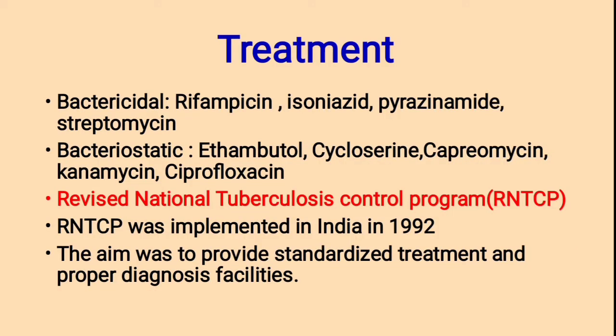Treatment — bactericidal drugs include rifampicin, isoniazid, pyrazinamide, and streptomycin. Bacteriostatic drugs include ethambutol, cycloserine, capreomycin, kanamycin, and ciprofloxacin. The Revised National Tuberculosis Control Program (RNTCP) is the treatment strategy implemented in India in 1992. Its aim was to provide standardized treatment and proper diagnosis facilities to TB patients.